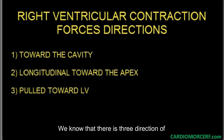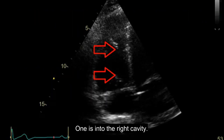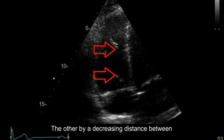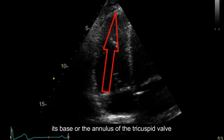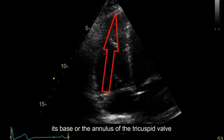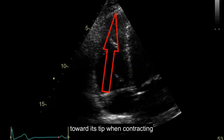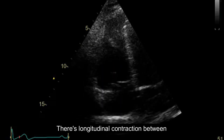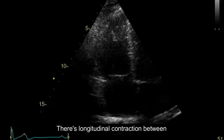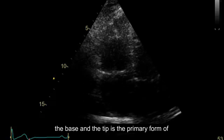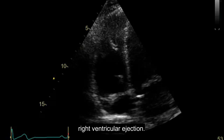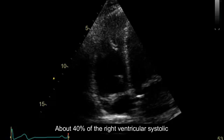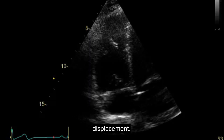We know that there are three directions of contractile forces in the right ventricle. One is into the right cavity, the other by a decrease in distance between its base — or the annulus of the tricuspid valve — toward its tip when contracting. This longitudinal contraction between the base and the tip is the primary form of right ventricular ejection; about 40% of the right ventricular systolic function is due to this longitudinal displacement.